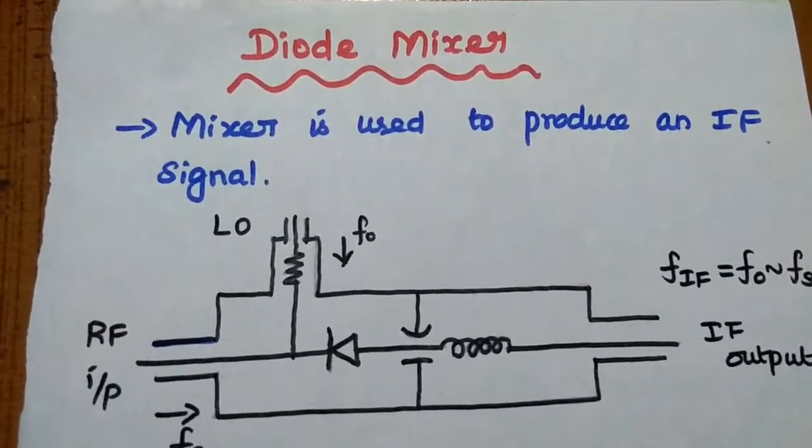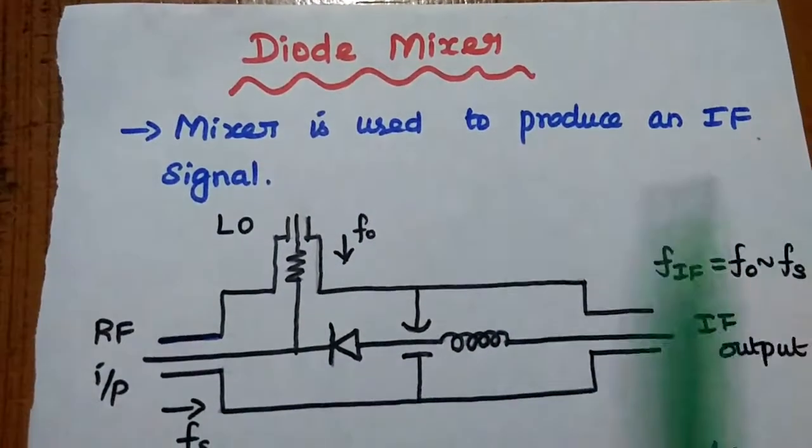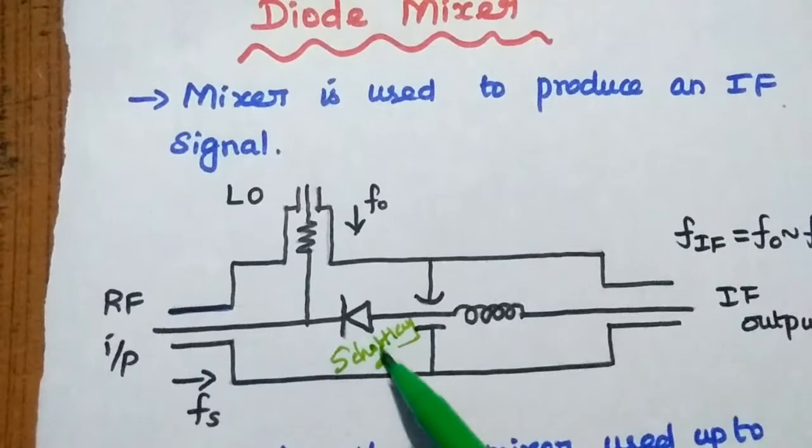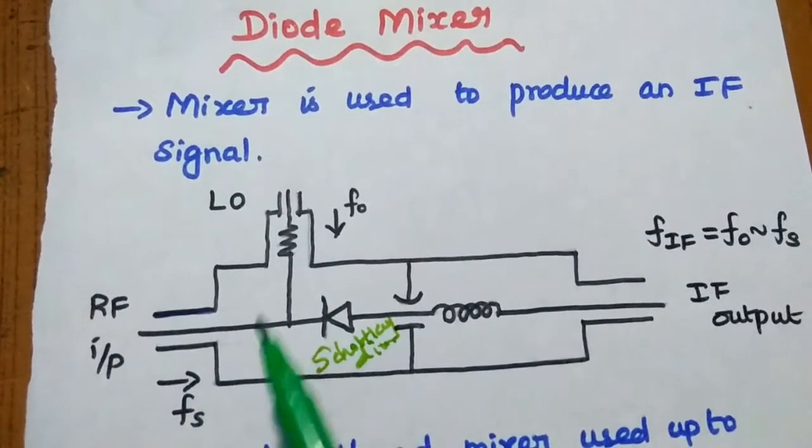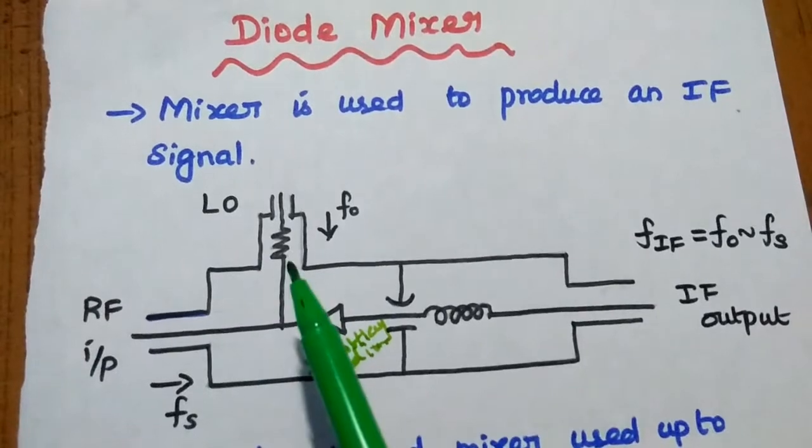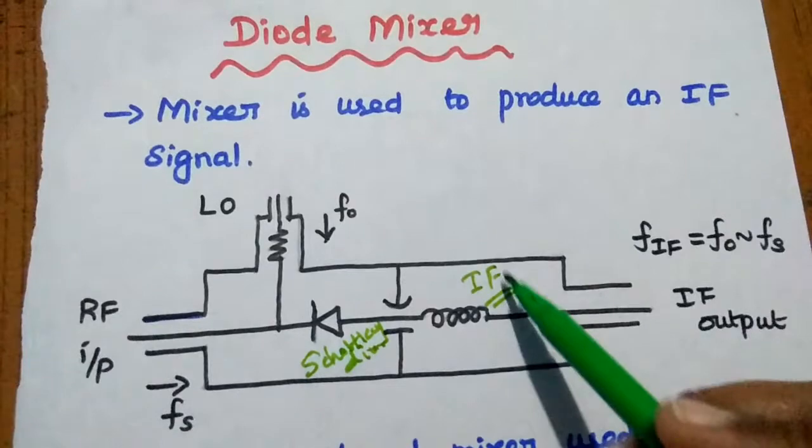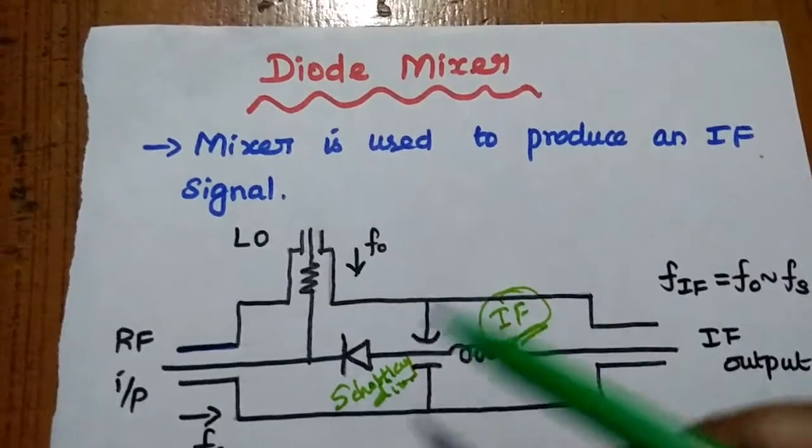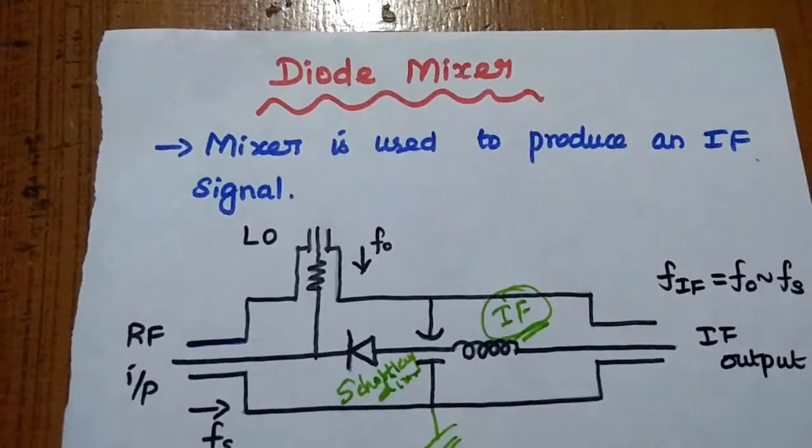Next application is diode mixer. Here mixer is used to produce an intermediate frequency signal. So this is the Schottky diode placed inside the mixer. RF input signal is given at one port. Local oscillator input is given like this. These two signals are combined and then produce the intermediate frequency signal. That can be taken out from this choke point and the undesired signals are filtered out by using the low pass filters.